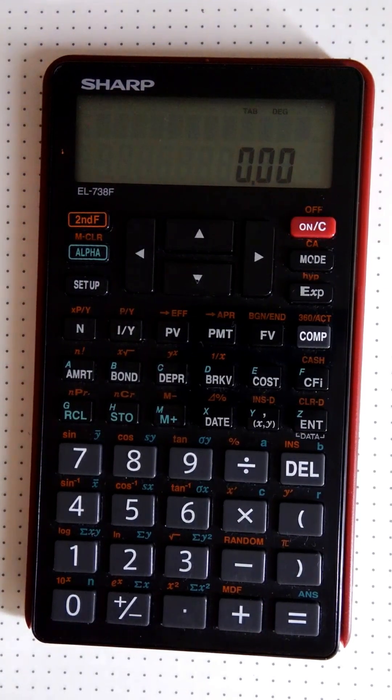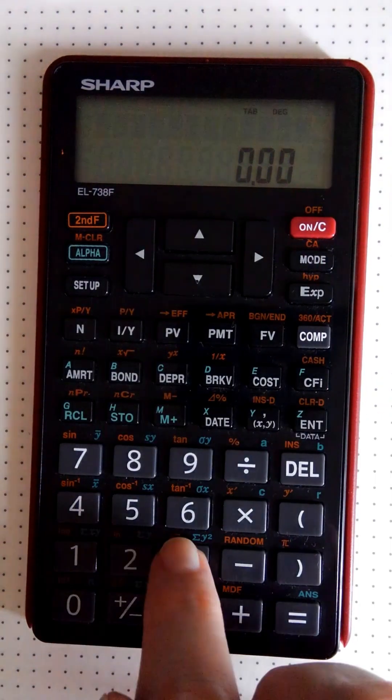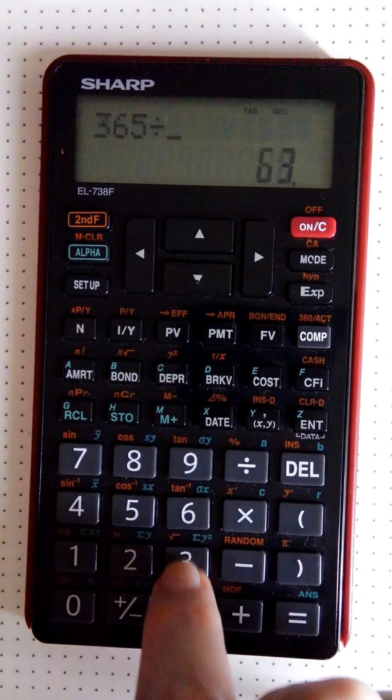We're just going to go through a few ways to clear out the memory. The first thing to recognize is that the ON/C button just clears your screen. So if I had, say, 365 divided by 63...